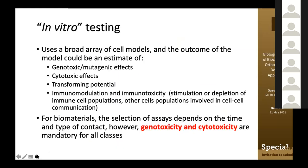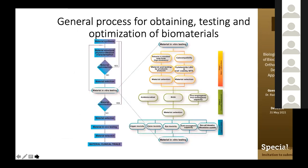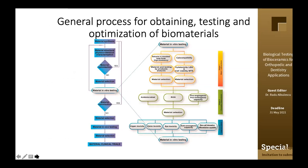For biomaterials, the selection of assays depends on the type of contact, and in any case genotoxicity and cytotoxicity are mandatory. We have a general multi-step process in obtaining, testing, and optimizing biomaterials, with a large number of in vitro tests feeding back into material optimization.